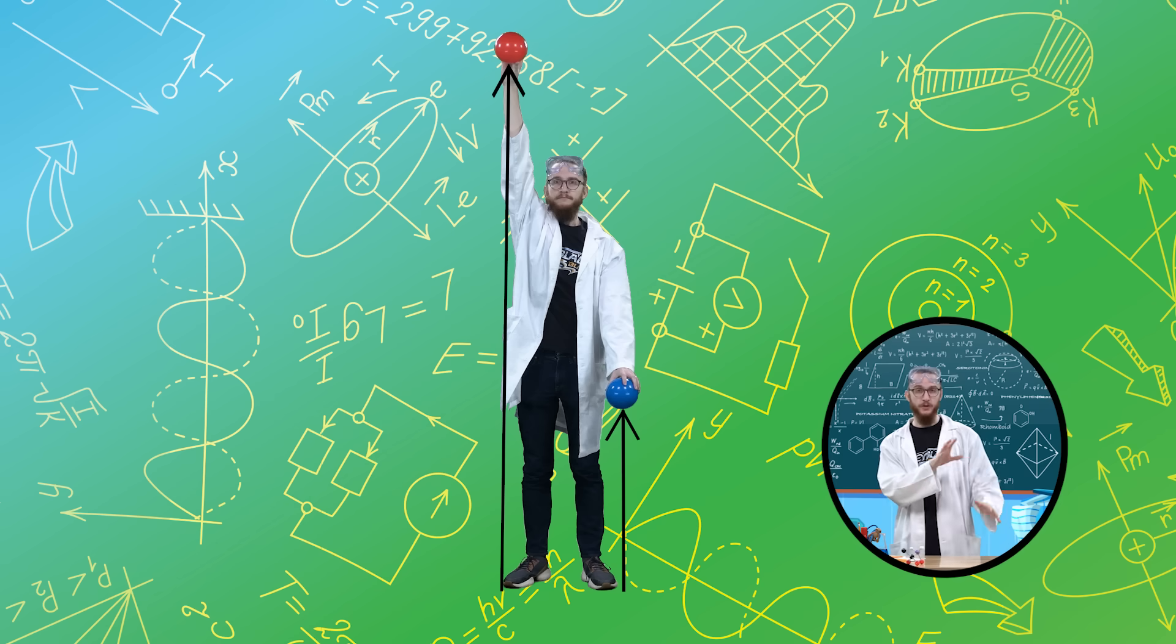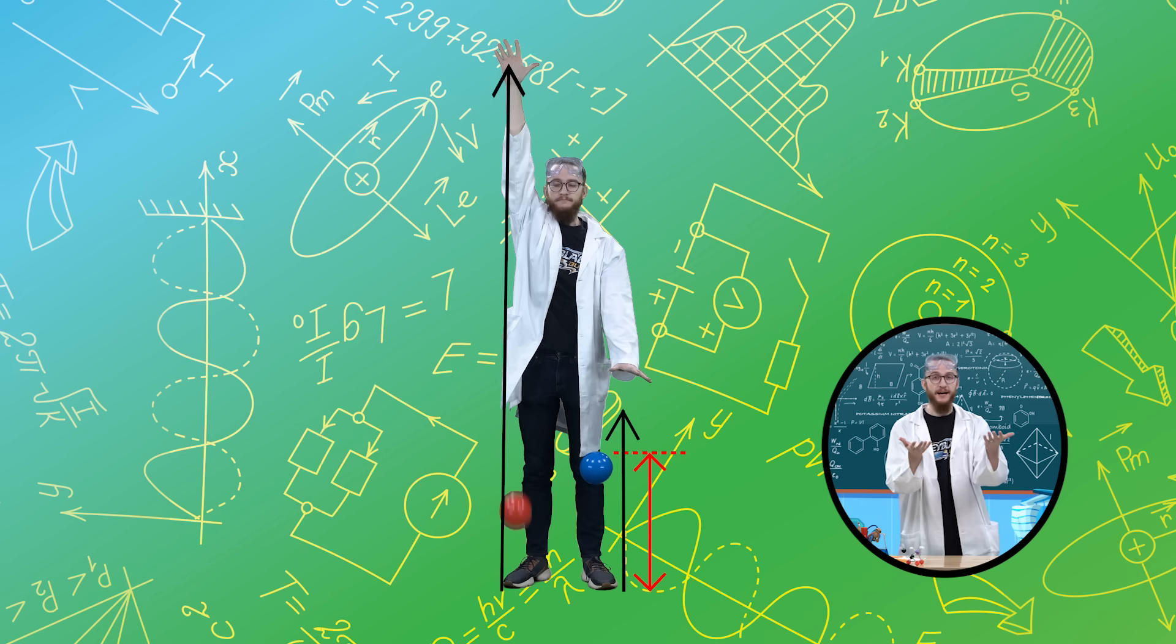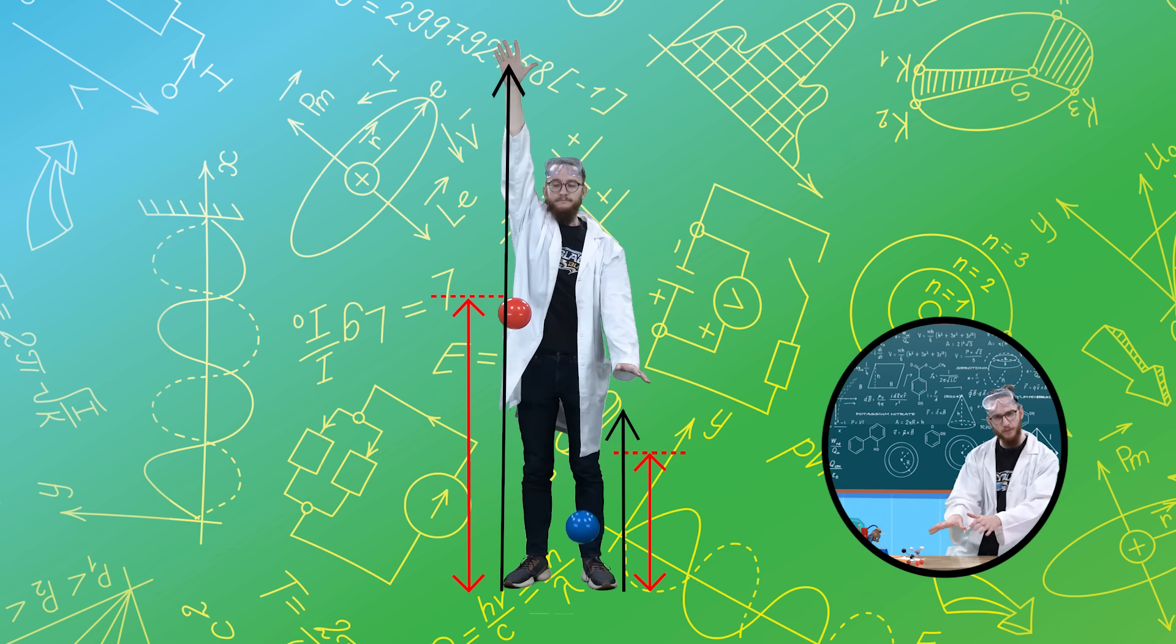So, before, when I dropped those two balls, the ball dropped from the higher height had more gravitational potential energy. It had more energy in it when it was moving, and so when it hit the ground, it had a bigger collision, and then it bounced higher than the ball dropped from a smaller height.